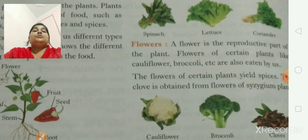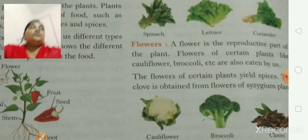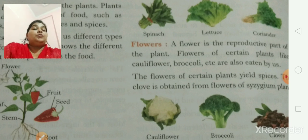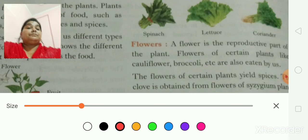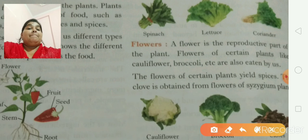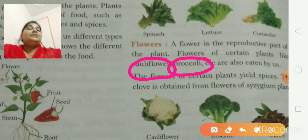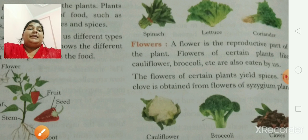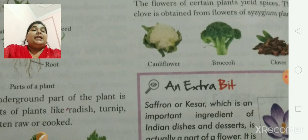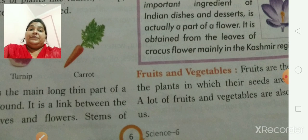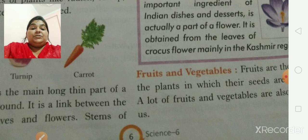Flower is also a main reproductive part of a plant, as you know very well. Flowers of certain plants are also edible. For example, cauliflower and broccoli — these are all flowers that we eat. Here you can see this is the cauliflower and this is the broccoli, and cloves which we also use in our food.